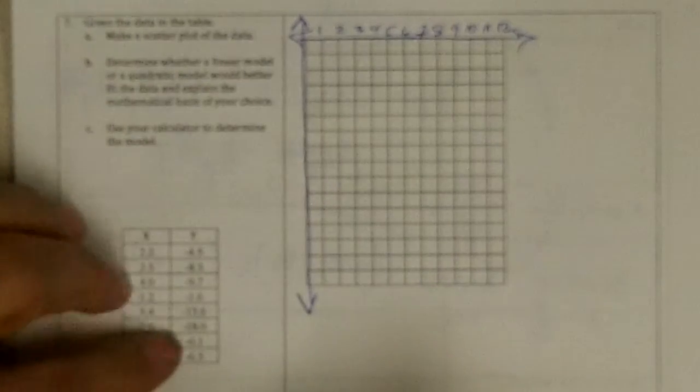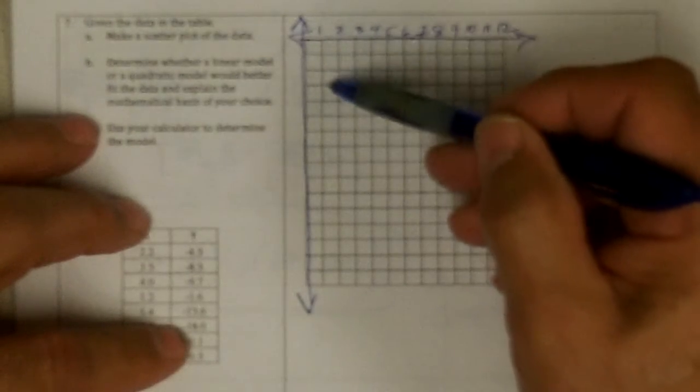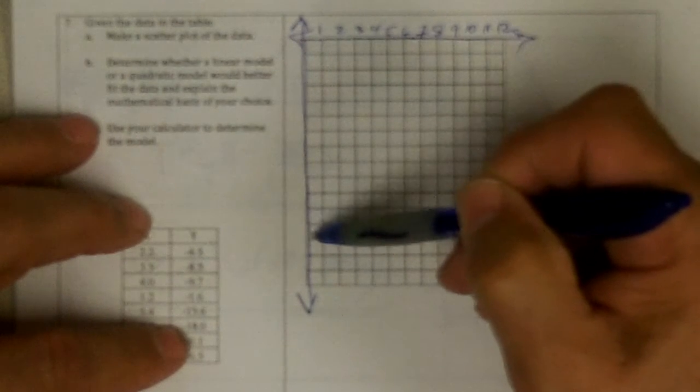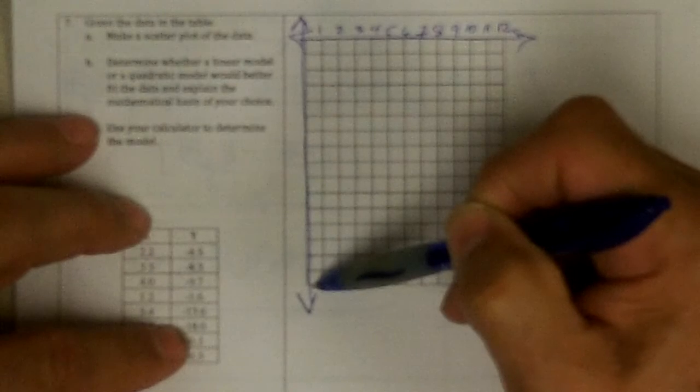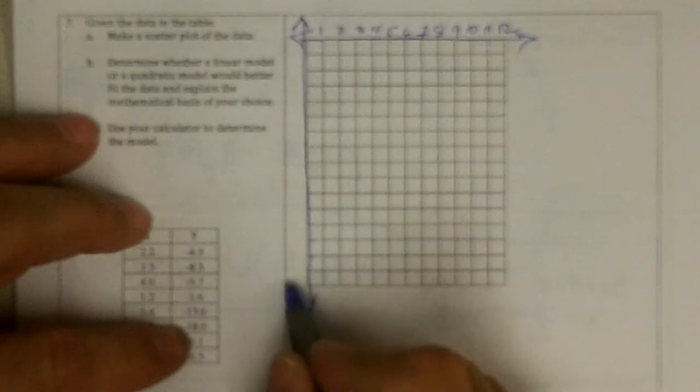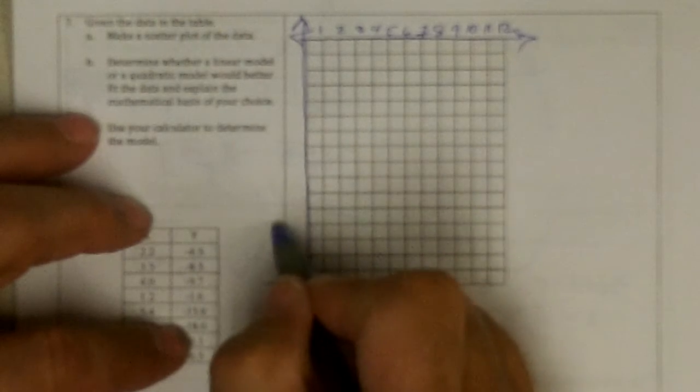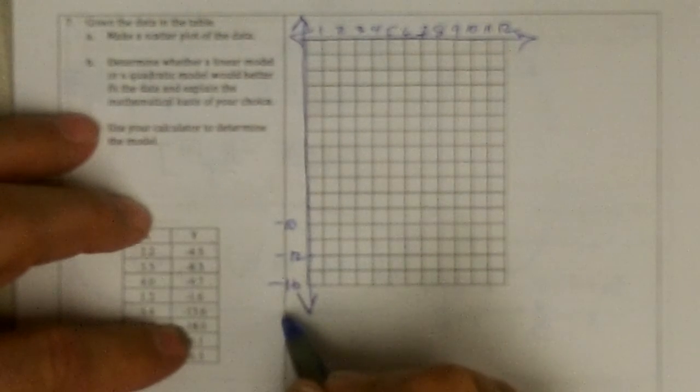And to get to negative 18 let's see: 1, 2, 3, 4, 5, 6, 7, 8, 9, 10, 11, 12, 13, 14, 15, 16, 17, 18 would be two more. This is minus 16, minus 12, minus 10, minus 18 would be down about here.